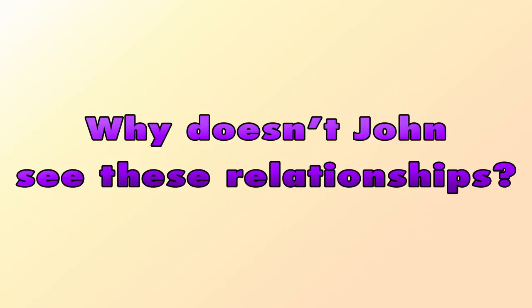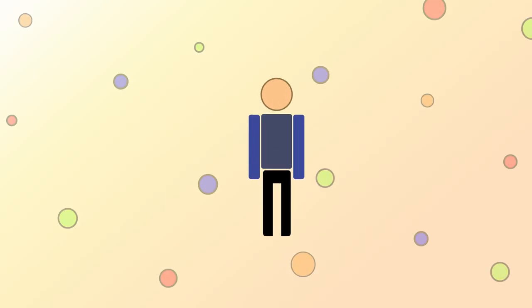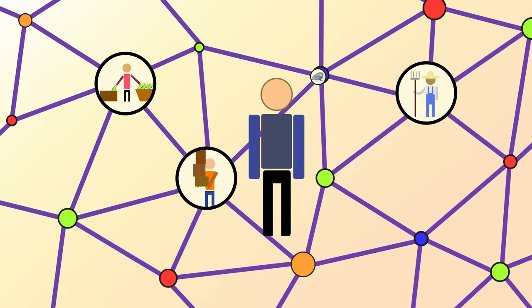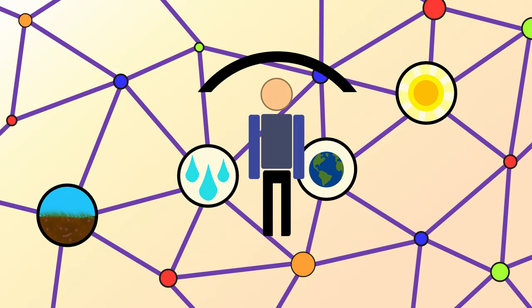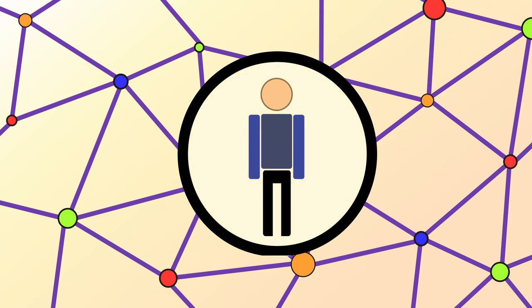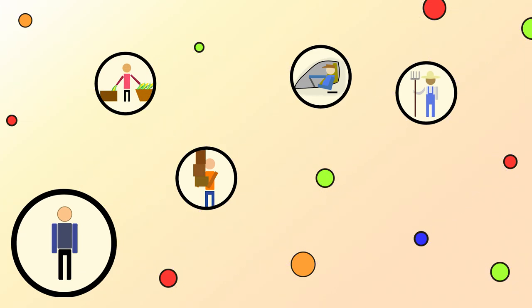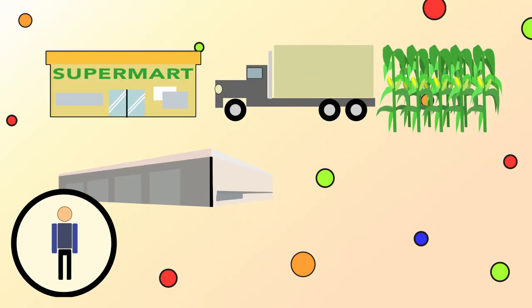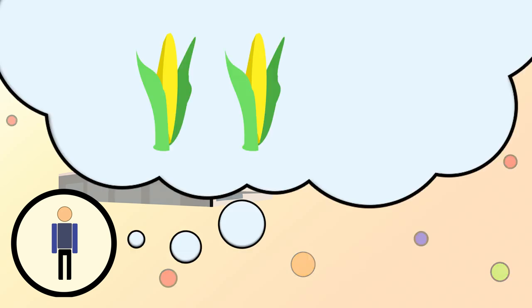But why doesn't John see these relationships? It's hard for John to recognize how interconnected he is to so many other people as well as the earth when he's so separated from them. He is separated from them by physical distance, the anonymous processes of production that obscure the identities of the workers, and by his unawareness of the web that connects them.